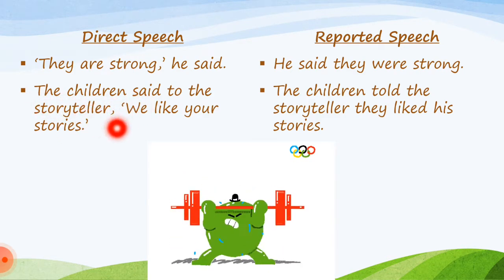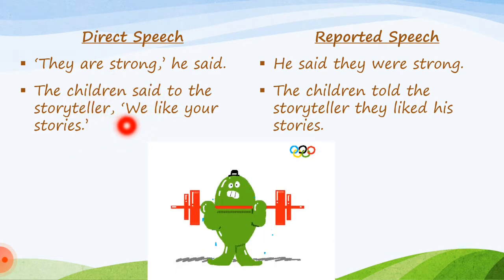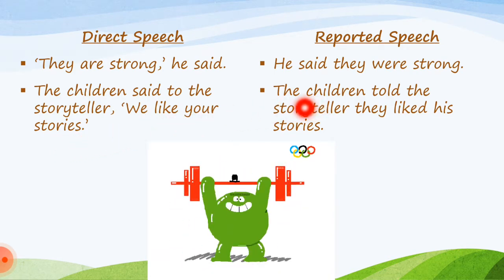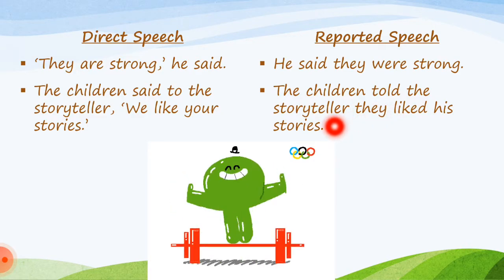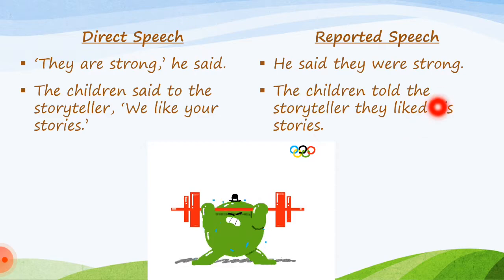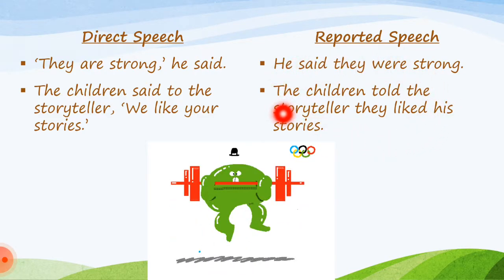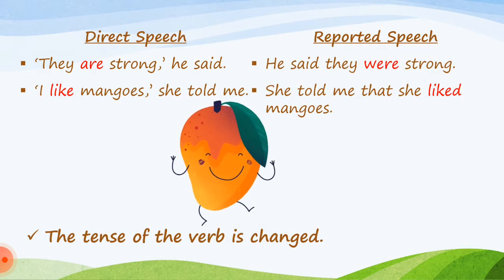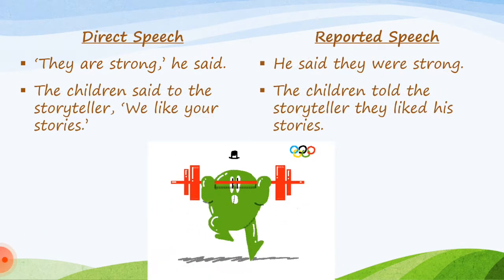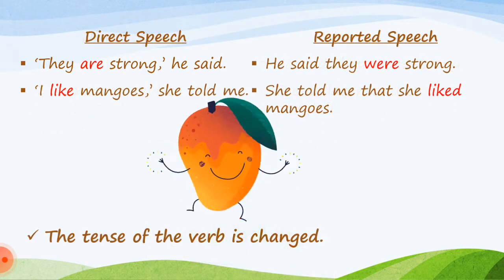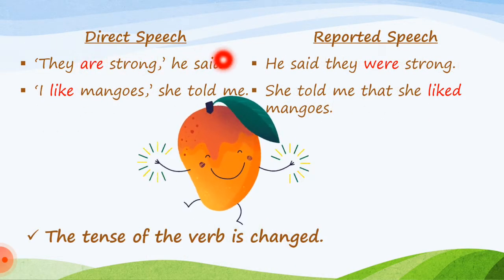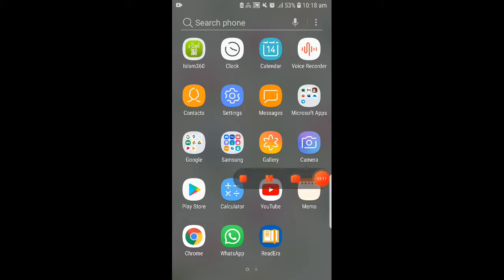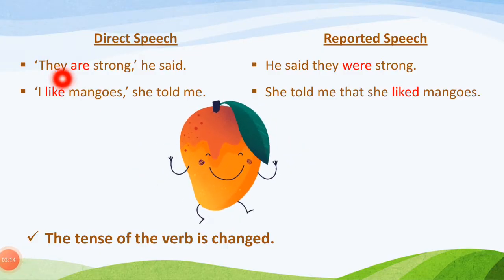Let's look at another example. 'We like your stories,' the children said to the storyteller. You can see the inverted commas and these are the exact words of the children. In reported speech it becomes: the children told the storyteller they liked his stories. There are no inverted commas and no exact words of the speaker being used.